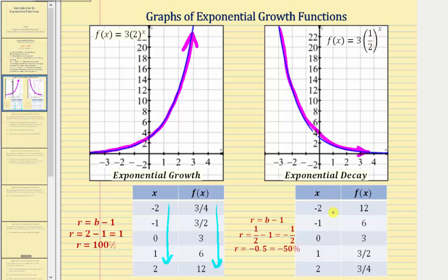As x increases, f of x decreases. In fact, as x increases by one, the function values decrease by 50%, or by half. One more thing to notice about both of these functions is that a, the initial value, equals three, which also gives us the vertical intercept for both functions.